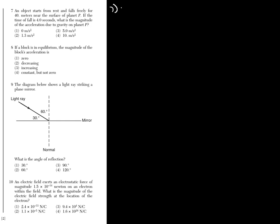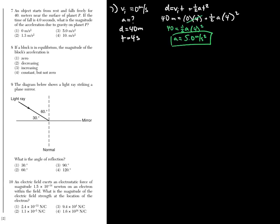Number seven: an object starts at rest and falls freely near the surface of Planet P, so we're not using 9.81 m/s². The object falls 40 meters in 4 seconds. Using the free-fall kinematics equation and solving for acceleration, you get 5.0 meters per second squared, which is choice three.